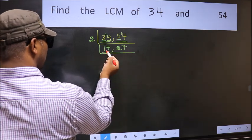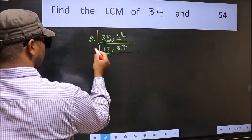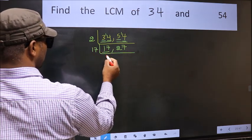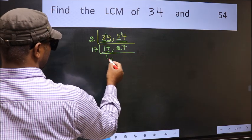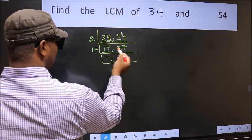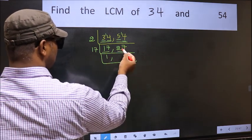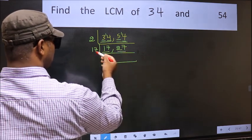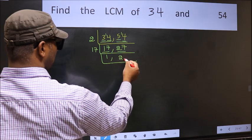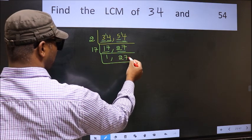Now here we have 17. 17 is a prime number, so 17 divides 17 once. The other number, 27, is not divisible by 17, so we write it down as it is.